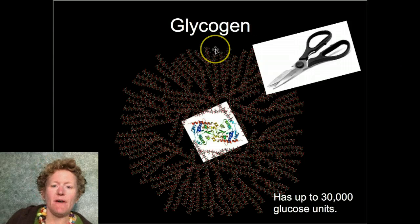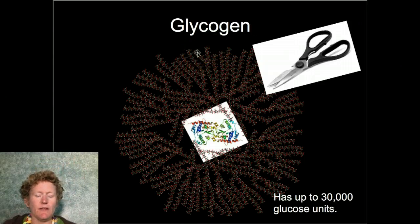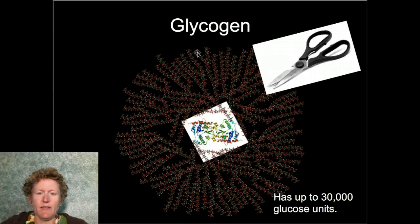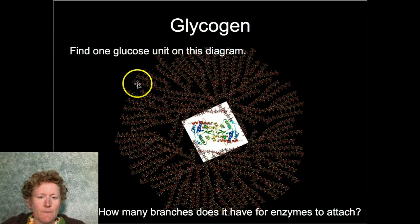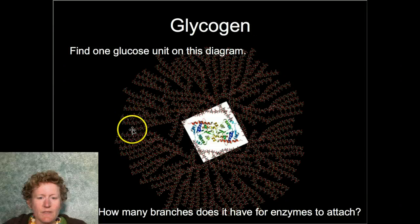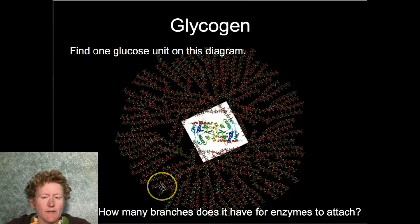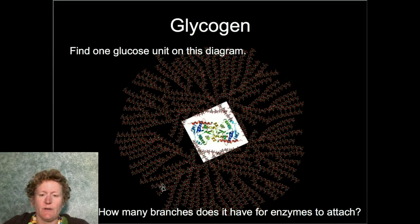You can clip off up to 30,000 glucose units in glycogen, and this happens in your liver all the time without you realizing it. Branched chains are very important — they give enzymes lots of places to start working on glycogen and break it back down to glucose when your body needs energy.